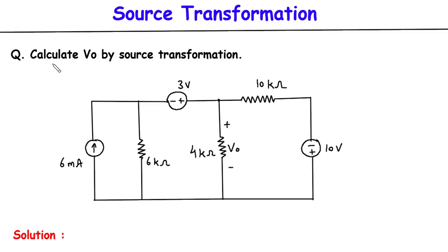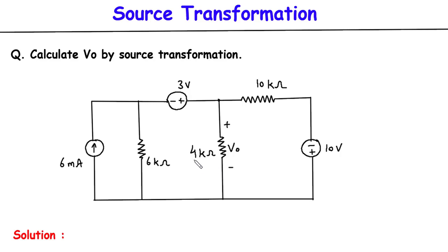Source transformation. We will calculate VO by source transformation. Here in this circuit, we have to find VO by using source transformation. We can convert current source to voltage source or voltage source to current source. By using this source transformation technique, we will simplify this circuit first, and after that we will find the value of the voltage across this 4 kilo ohm, that is VO.